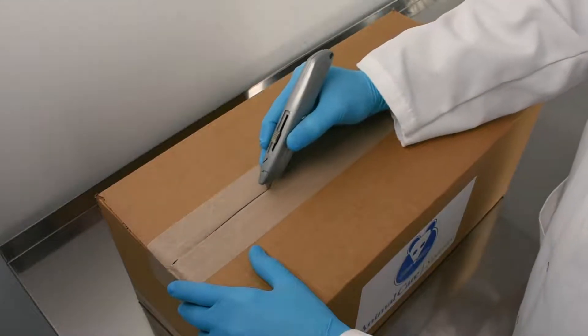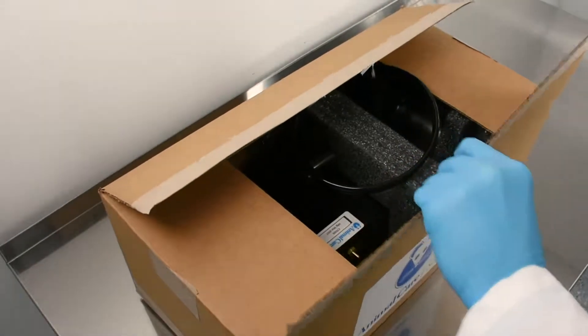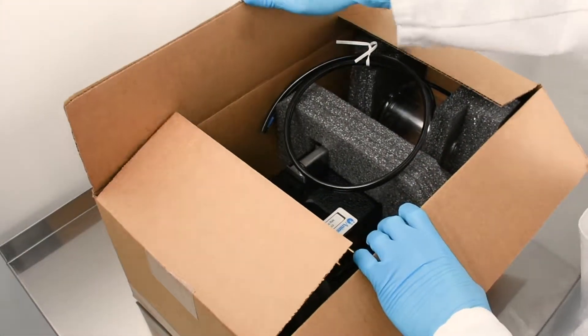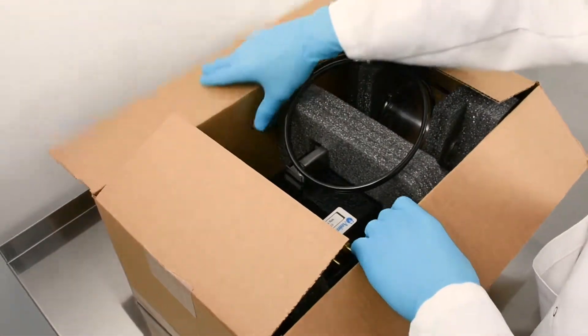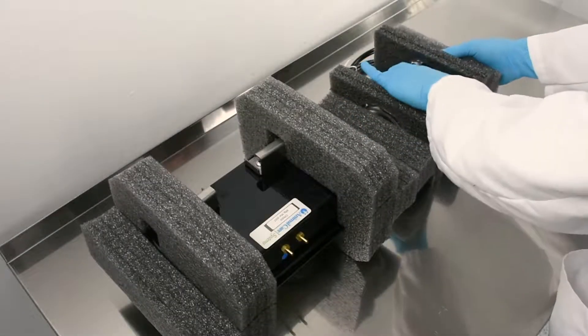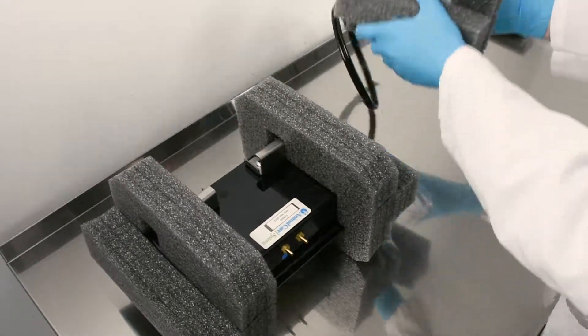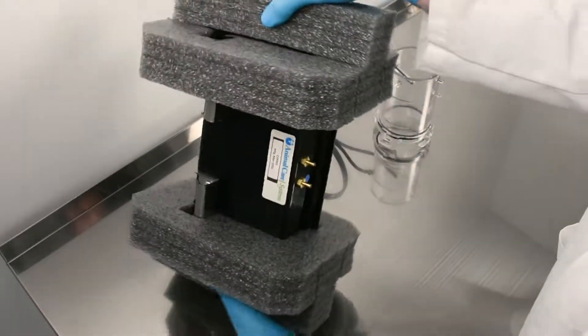When opening the box, do not cut too deeply or the hose may get damaged. Remove the foam padding from the sensor tube and rack status monitor housing.